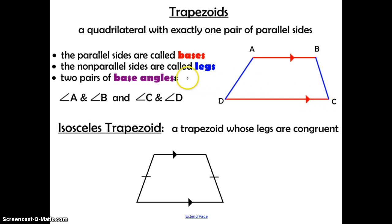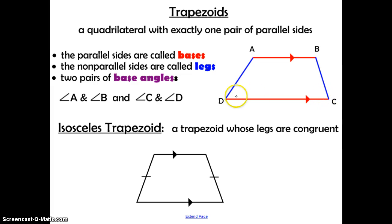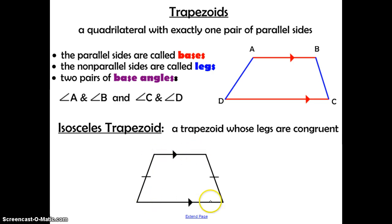Now we have two pairs of base angles. The base angles A and B are a pair of base angles because they lie on the same base, AB. And then angles D and C are a pair of base angles because they also lie on the same base, CD. An isosceles trapezoid is a trapezoid whose legs are congruent — one pair of parallel sides, and the non-parallel legs are congruent.